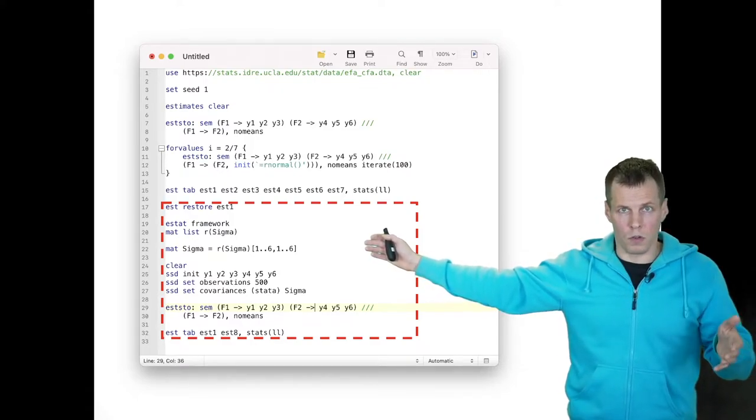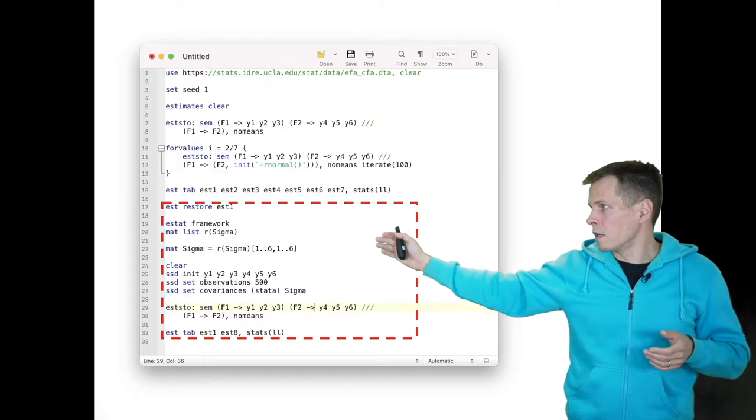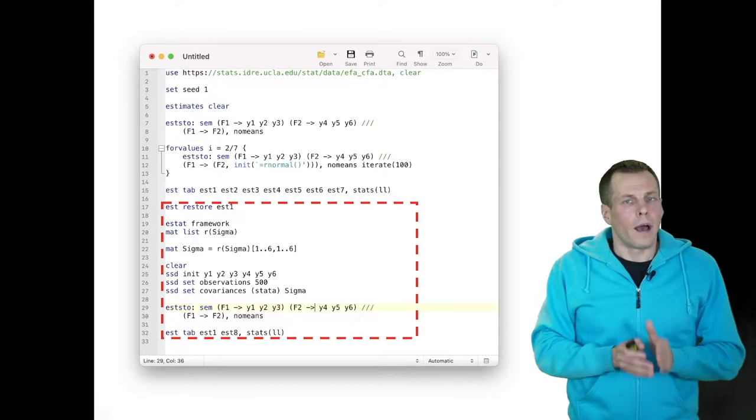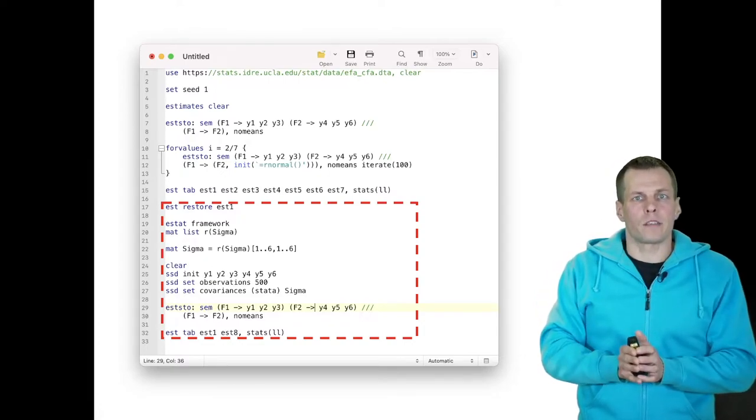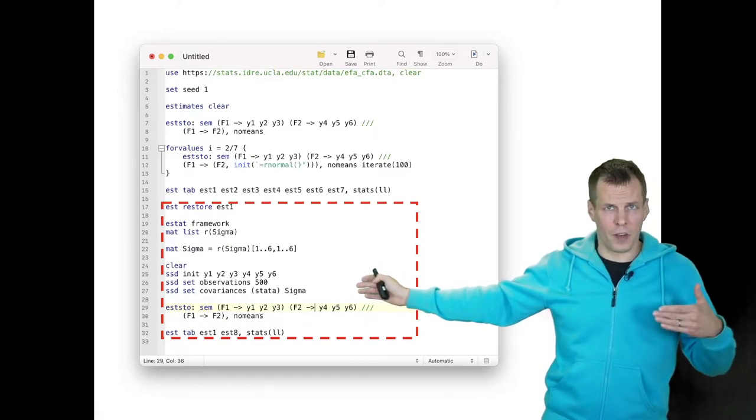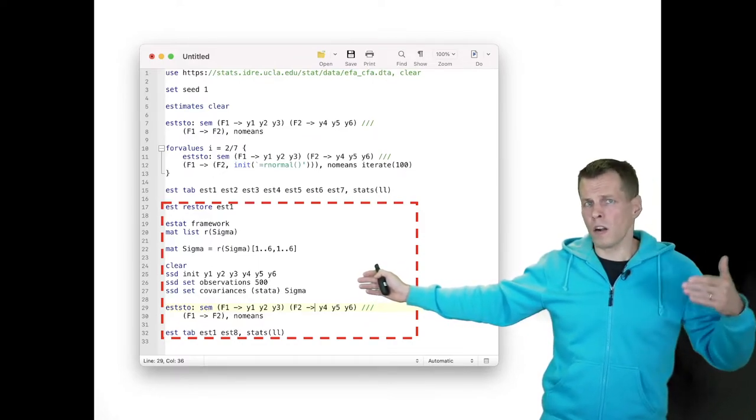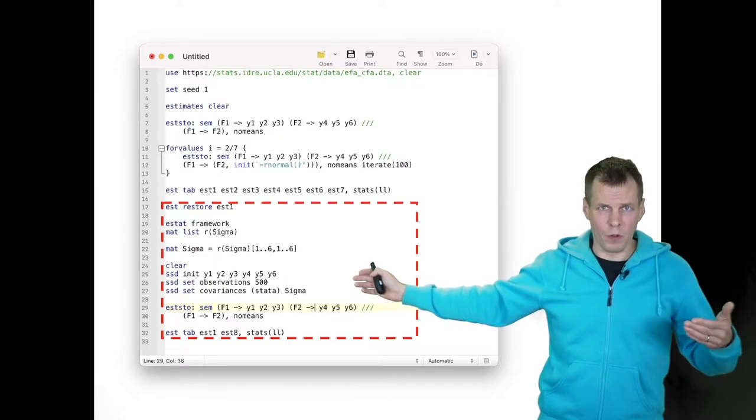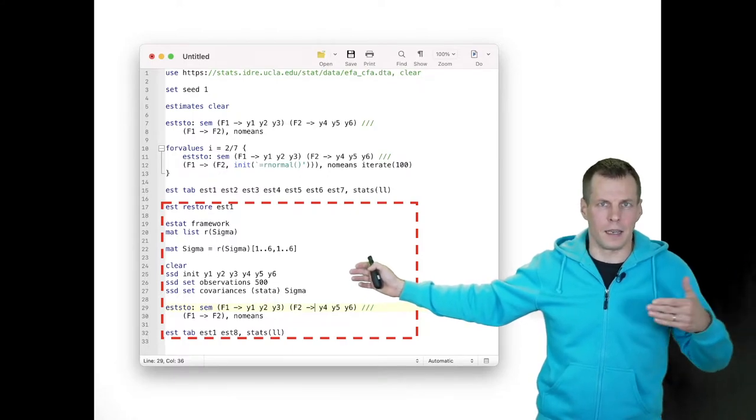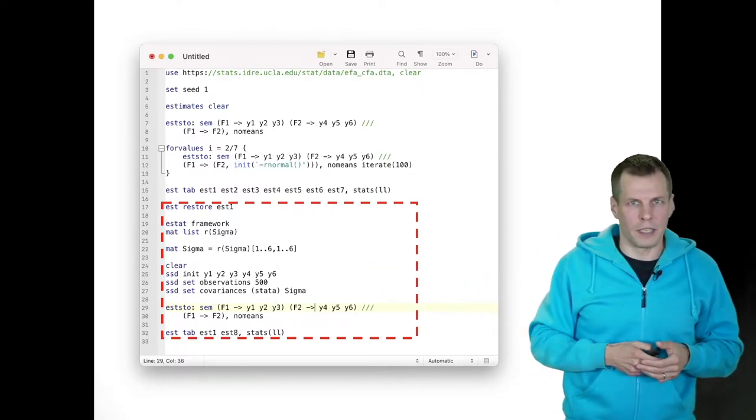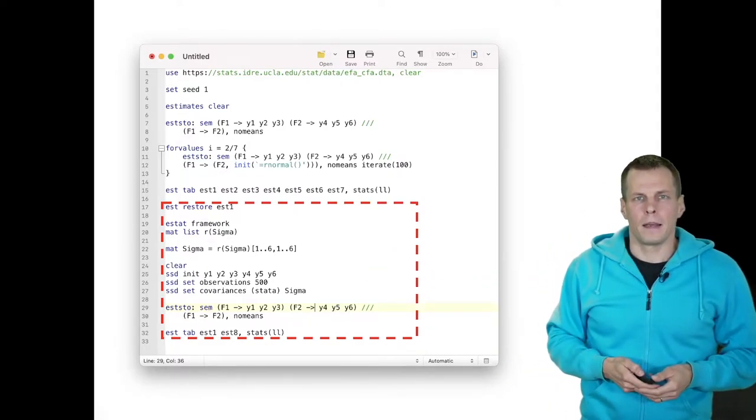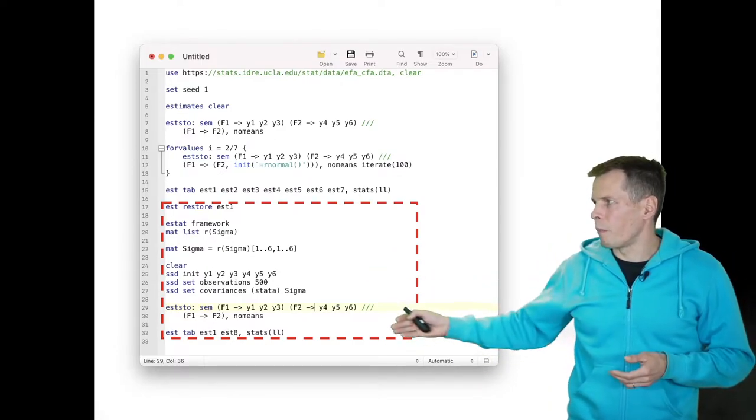And then we use SSD to set up summary data and we use this covariance matrix as our summary data. We set sample size number of observations to 500. Using a large value here would be preferable, but I'll just set it to 500 because that was my original sample size. And I put it there just without thinking. So put a large sample instead of 500 and then we run the same SEM and then we compare the results.